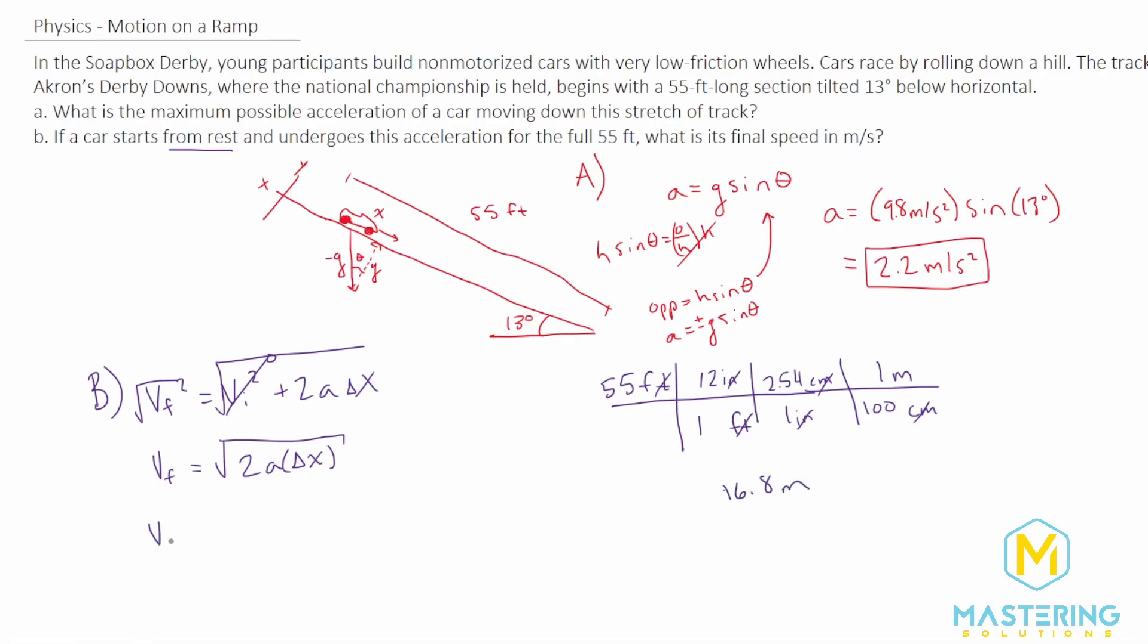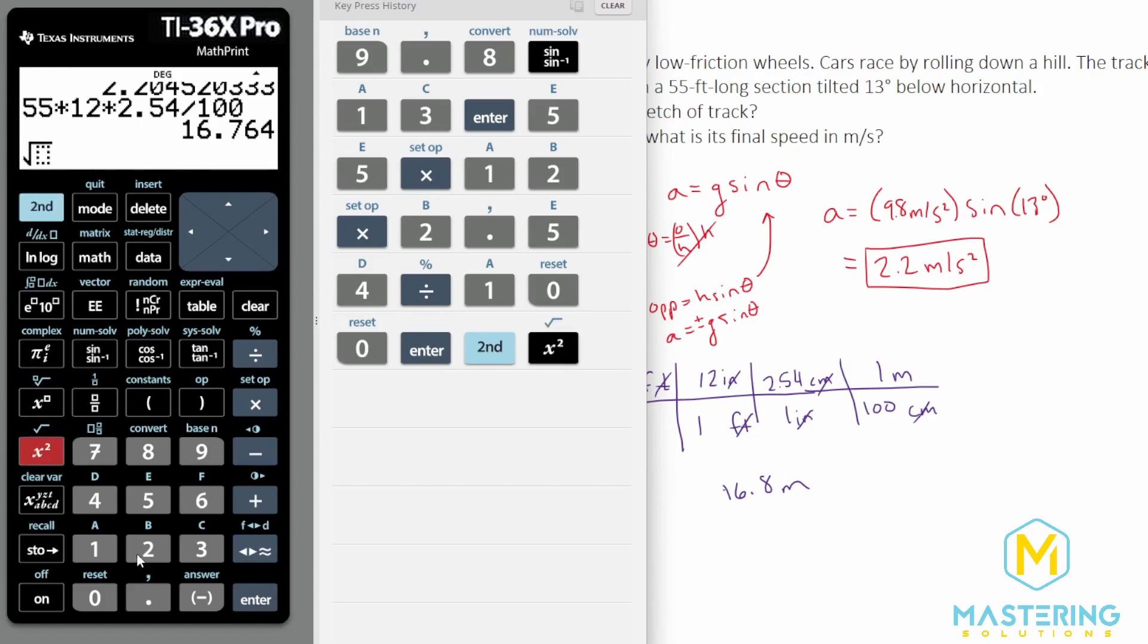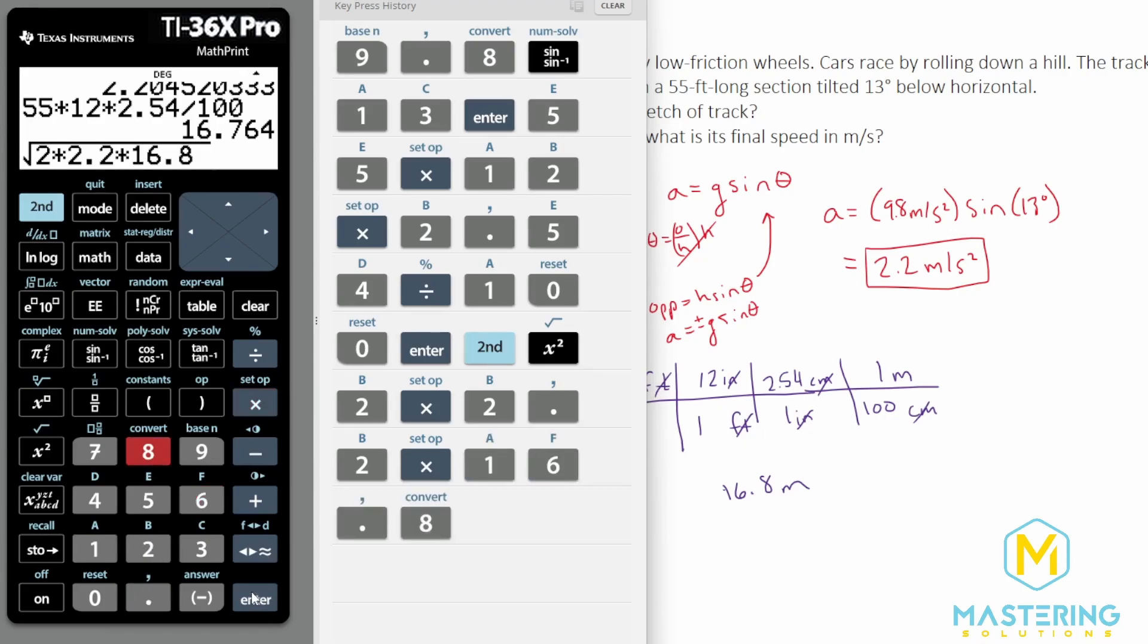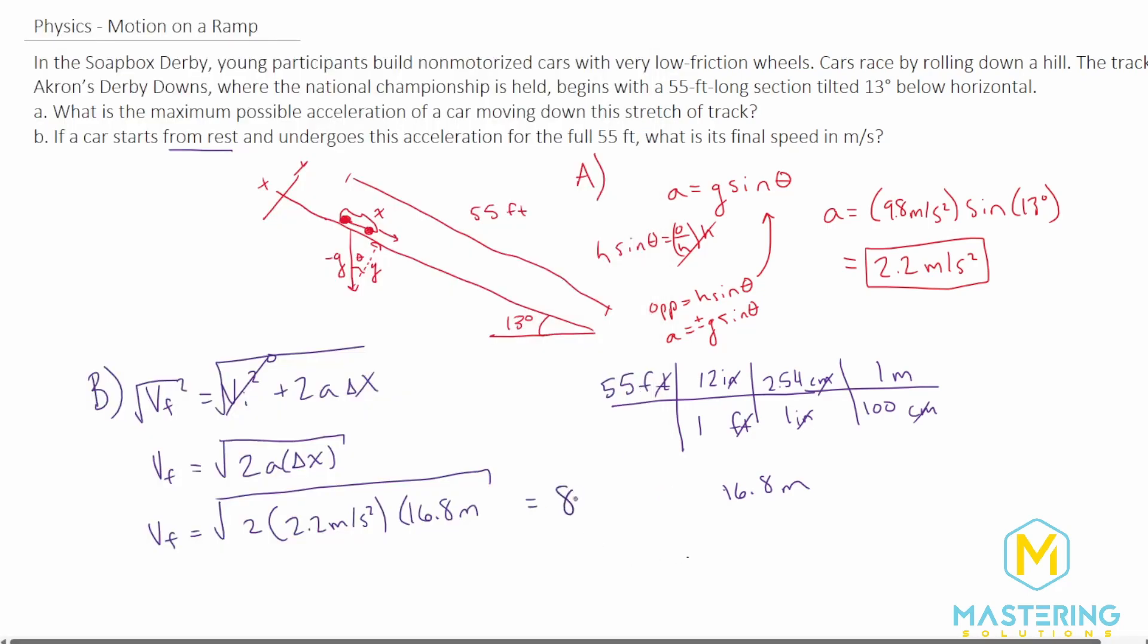Now the velocity final, we can plug it in here now. We have 2 times the acceleration, which we found is 2.2 meters per second squared, times the delta x, which we said is 16.8 meters. So we have the square root of 2 times 2.2 meters per second squared times 16.8 meters, gives us a final velocity of 8.6, so 8.6 meters per second is the final speed that the kids will get at the very bottom of the hill.